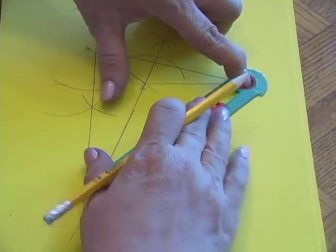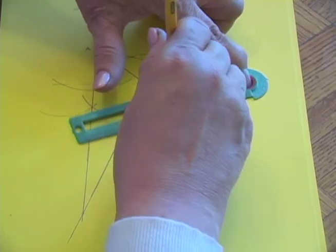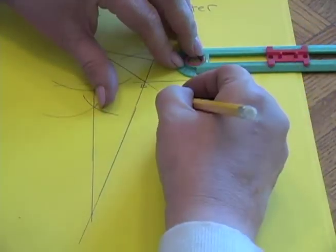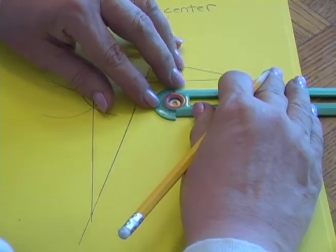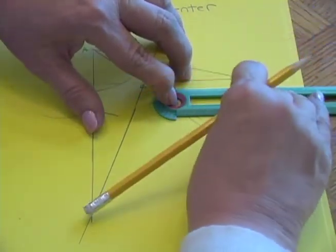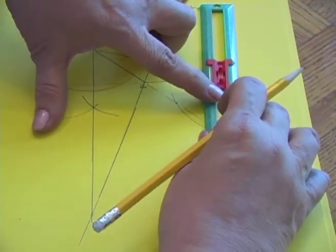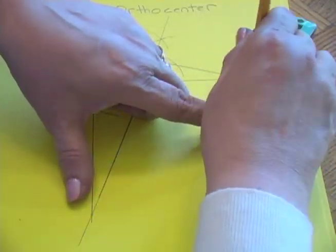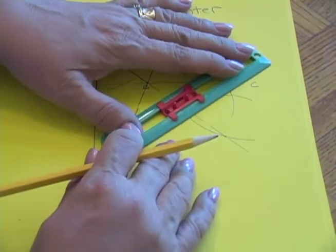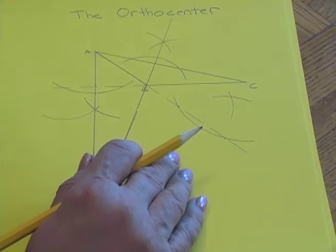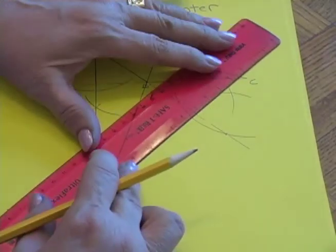Now I'll construct the altitude. I'm going to use a bigger ruler so I don't have to keep moving my compass and straight edge.